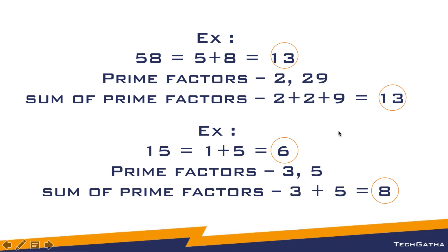Let's write the code. We need to: find the sum of individual digits, find the prime factors, and for every prime factor greater than 9, find the sum of its individual digits and add it. We have already seen how to find the sum of individual digits and prime factors — links are in the description.